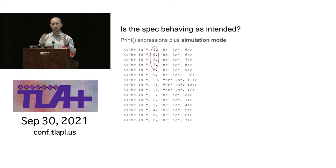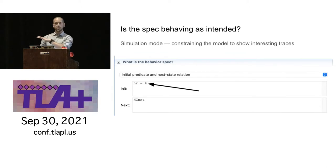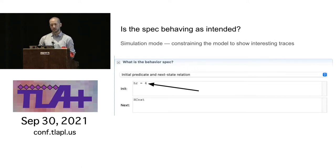If you want to narrow down the behaviors you see, you can override the initial predicate — either hand-write it, or if you've got a trace in the GUI, there's a feature where you can copy any state from the trace into the initial condition.